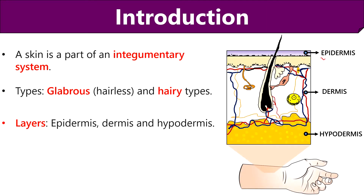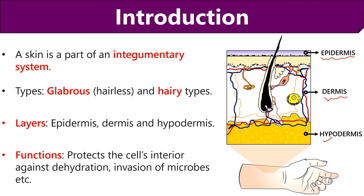Human skin mainly comprises two layers: epidermis and dermis. However, the hypodermis plays an important role in providing communication between the underlying muscles and bones with the cells and tissues of the dermis and epidermis layers. Skin performs a significant role in providing a physical barrier between the internal organs and the external factors of the environment.